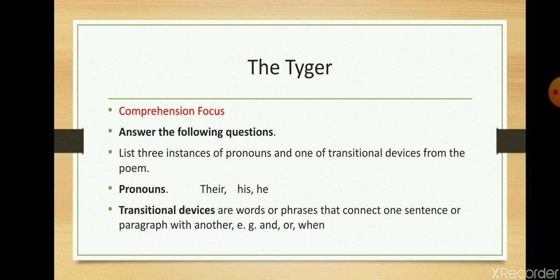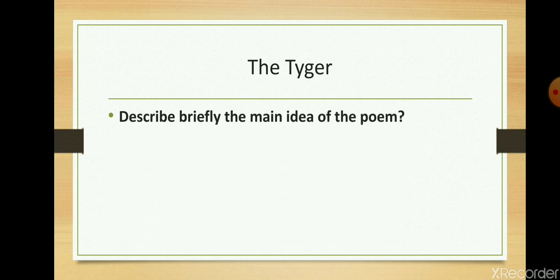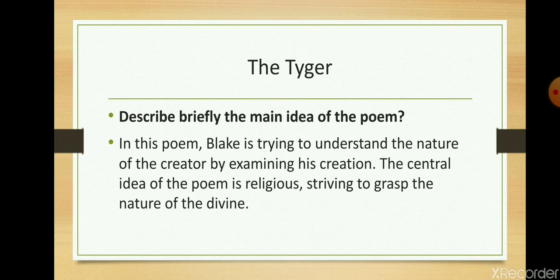or, and, and when. Question number two is: Describe briefly the main idea of the poem. In this poem, Blake is trying to understand the nature of the Creator by examining his creation.